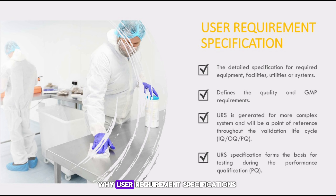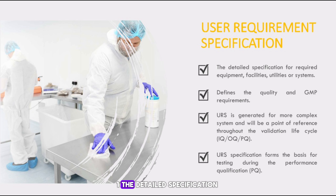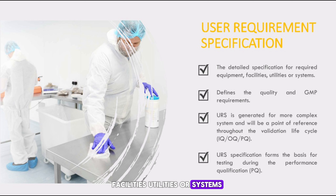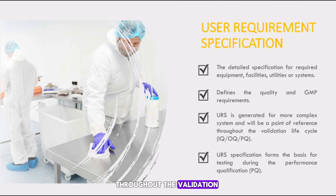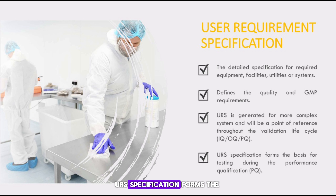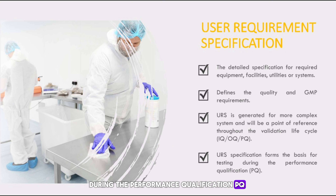Why is the User Requirement Specification necessary? URS provides the detailed specification for required equipment, facilities, utilities or systems, and defines the quality and GMP requirements. URS is generated for more complex systems and will be a point of reference throughout the validation life cycle of IQ, OQ, and PQ. The URS specification forms the basis for testing during Performance Qualification.